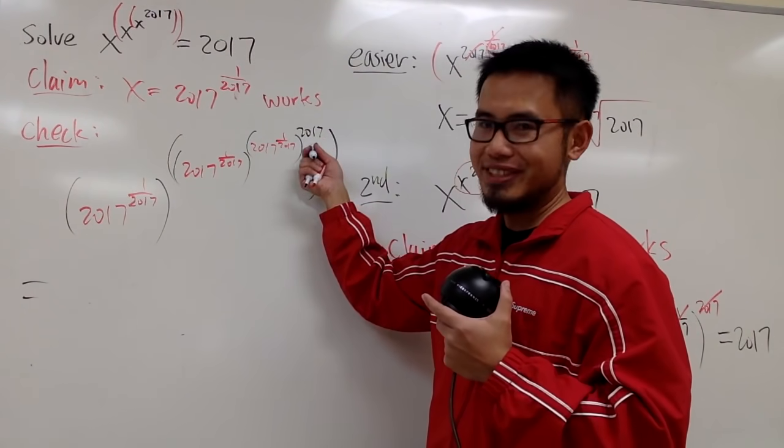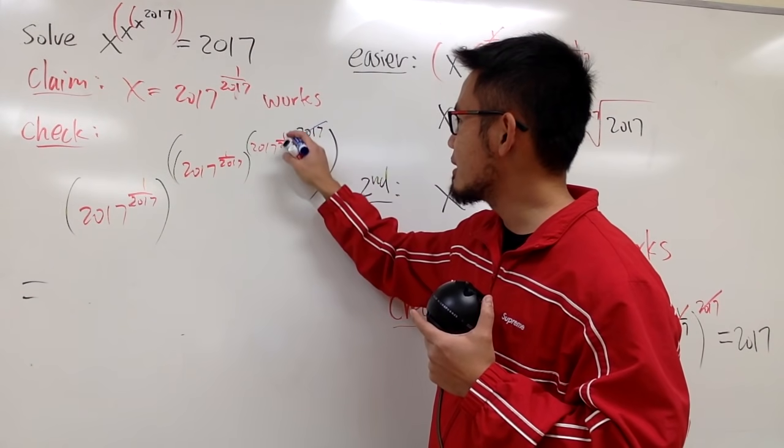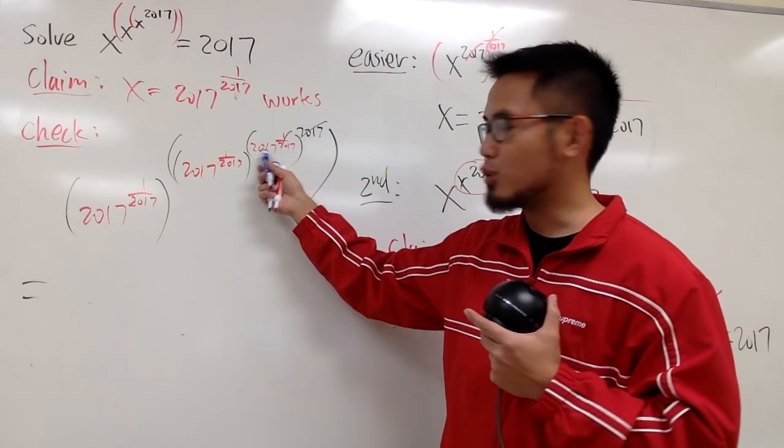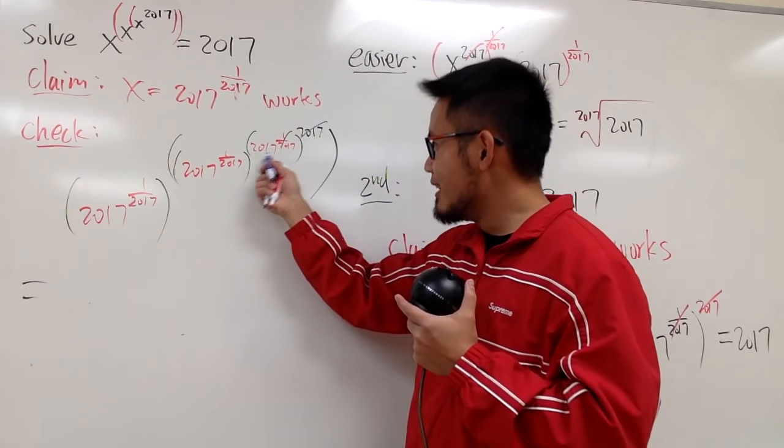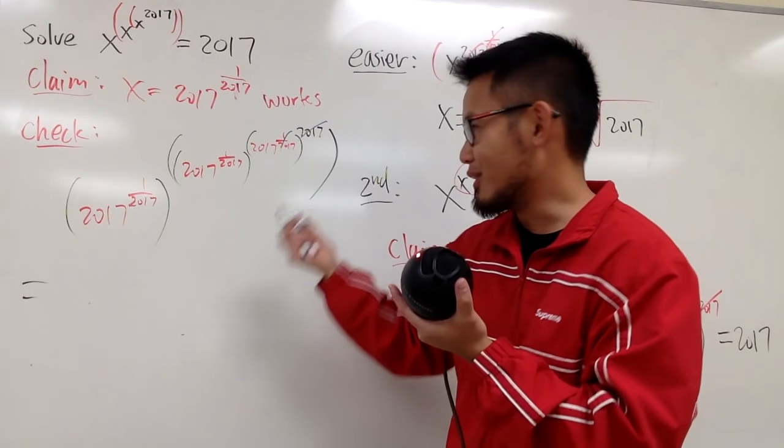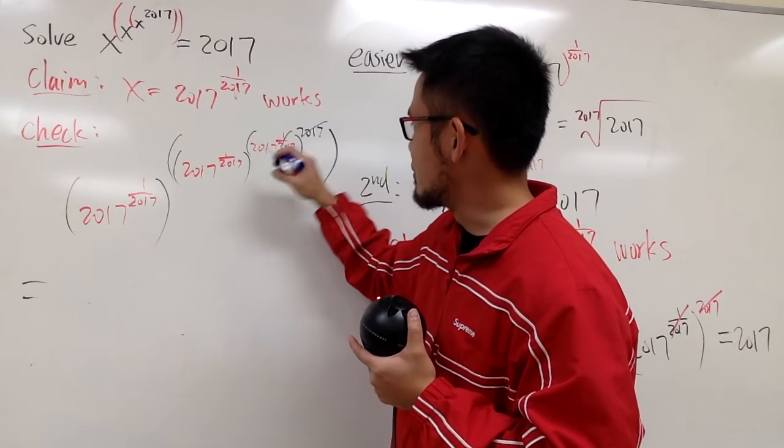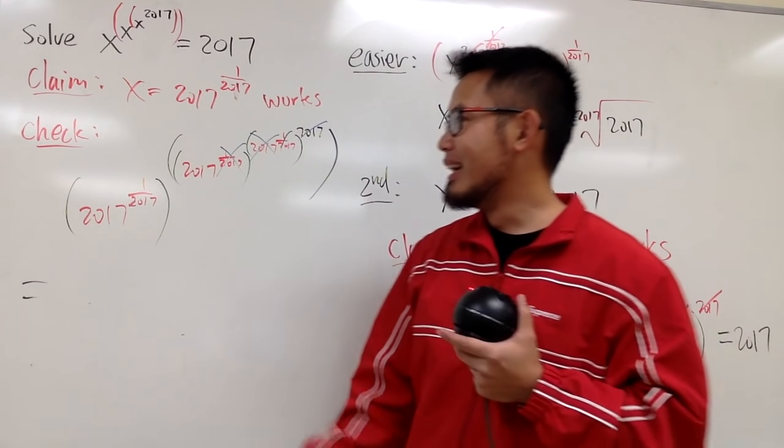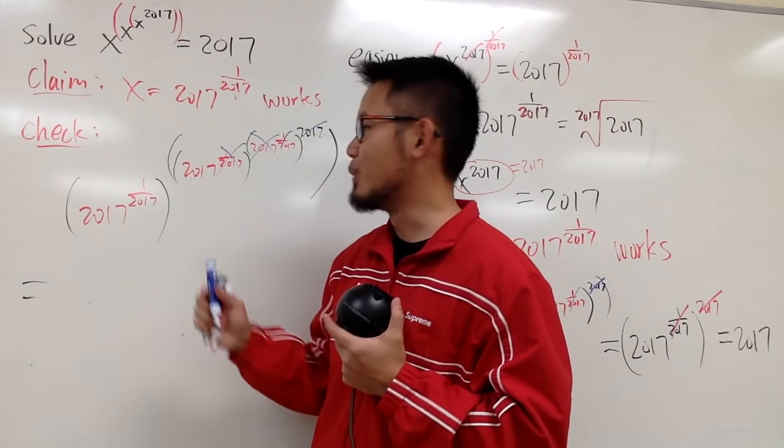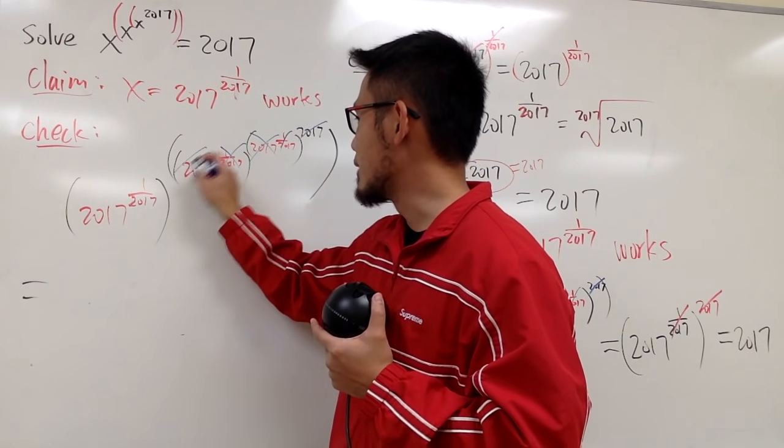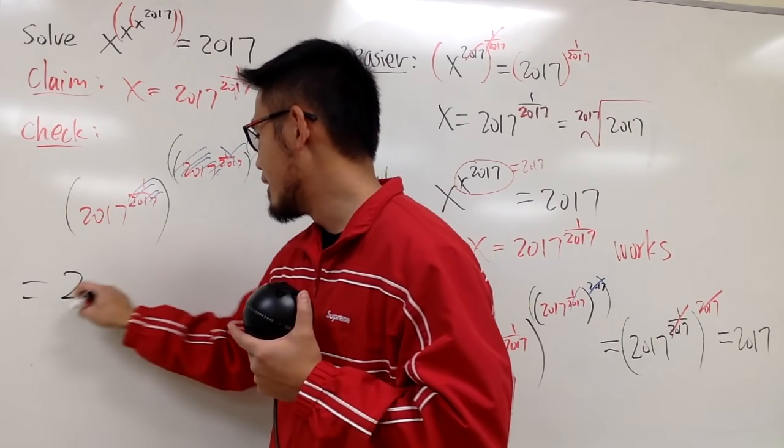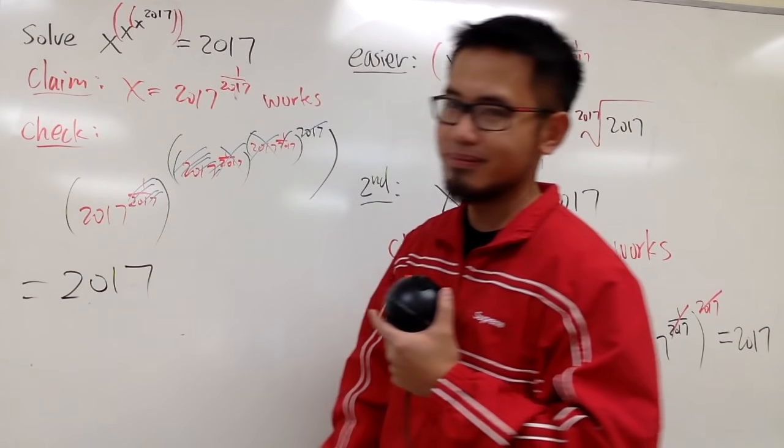You're going to work this out first. And you see, 2017 cancel with 1 over 2017, because you have the power to power situation. And this is just going to be 2017. And this 2017 will cancel with 1 over 2017, because of the same reason. Cross this out like that. And then, we will end up with this 2017, and that's going to cancel with this 1 over 2017. So cancel this out with that out. So, at the end, you have 2017.